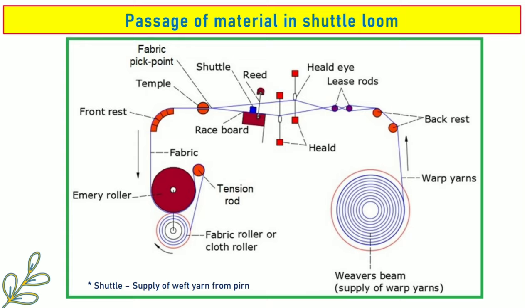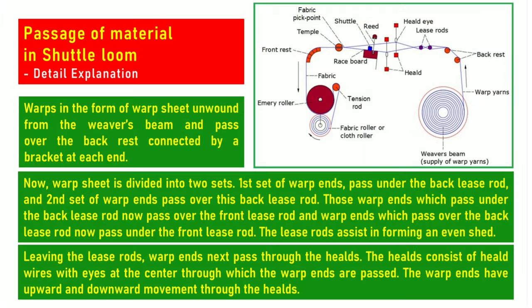This is the schematic presentation of passage of material in shuttle loom. The weaver's beam supplies the warp yarns and the shuttle supplies the weft yarn from the pirn. Warps in the form of a warp sheet are unwound from the weaver's beam and pass over the backrest connected by a bracket at each end. The warp sheet is then divided into two sets: the first set of warp ends passes under the back leeze rod and the second set passes over the back leeze rod.